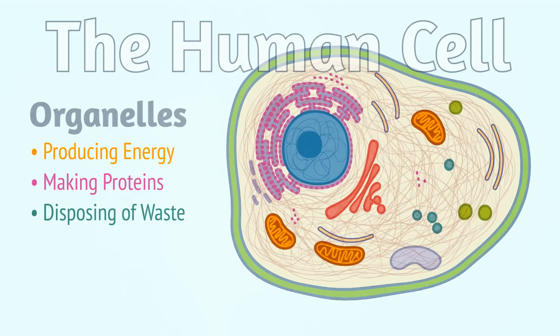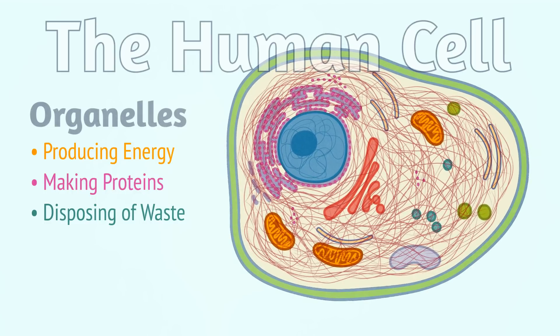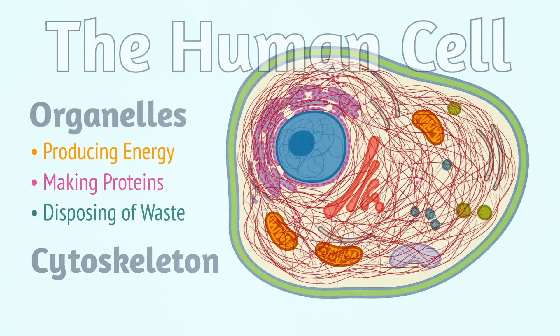Three different kinds of fibers assemble in a complex network, providing a skeleton for the cell.